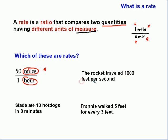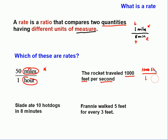The rocket traveled 1,000 feet per second. If we write that as a ratio, we would find 1,000 feet per one second. We have two different units of measure, two different quantities. Yes, this is a rate.